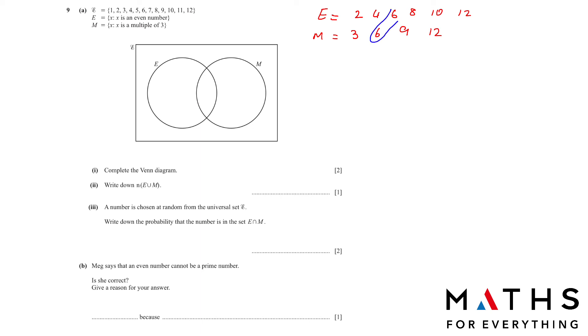We have to complete the Venn diagram. Whatever is common, we have 6 and 12. Write that in the center. The other remaining numbers, 2, 4, 8, 10, write it in the other part of circle E. And for M, write 3 and 9. But we are not done. We have to use all the numbers in the elements. We used 2, 3, 4, 6, 8, 9, 10, and 12. We are left with 1, 5, 7, and 11. We write it outside the circles.